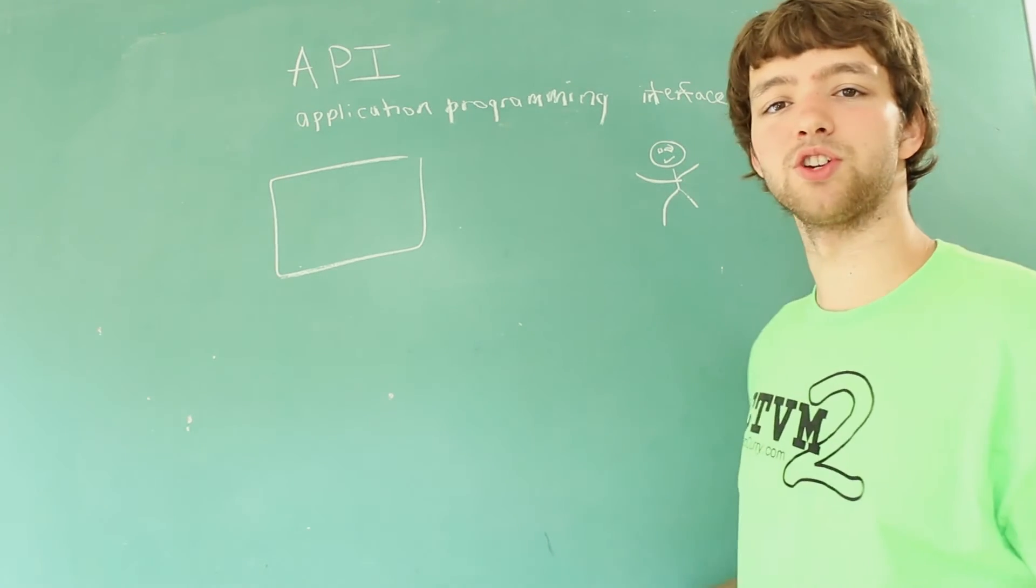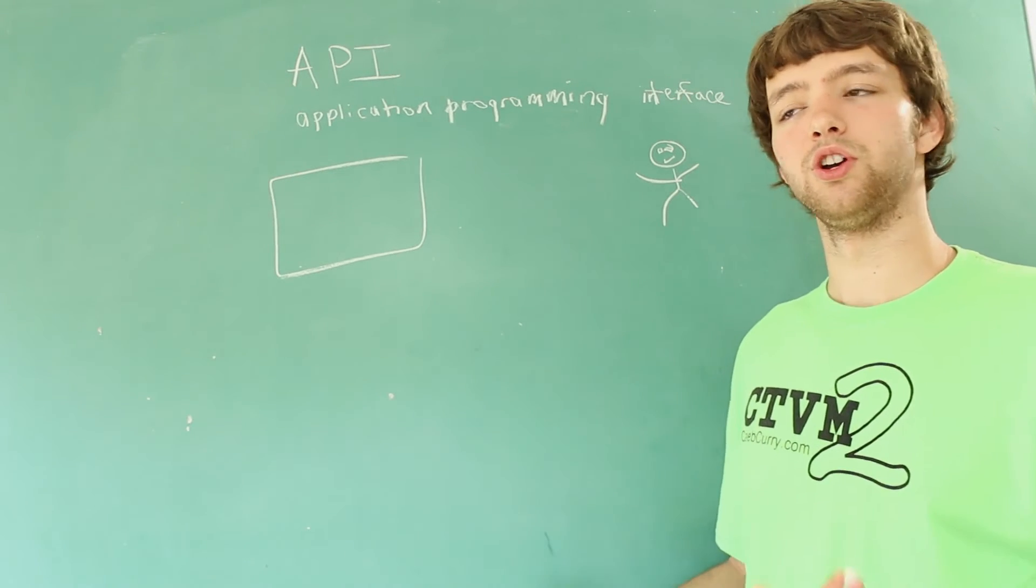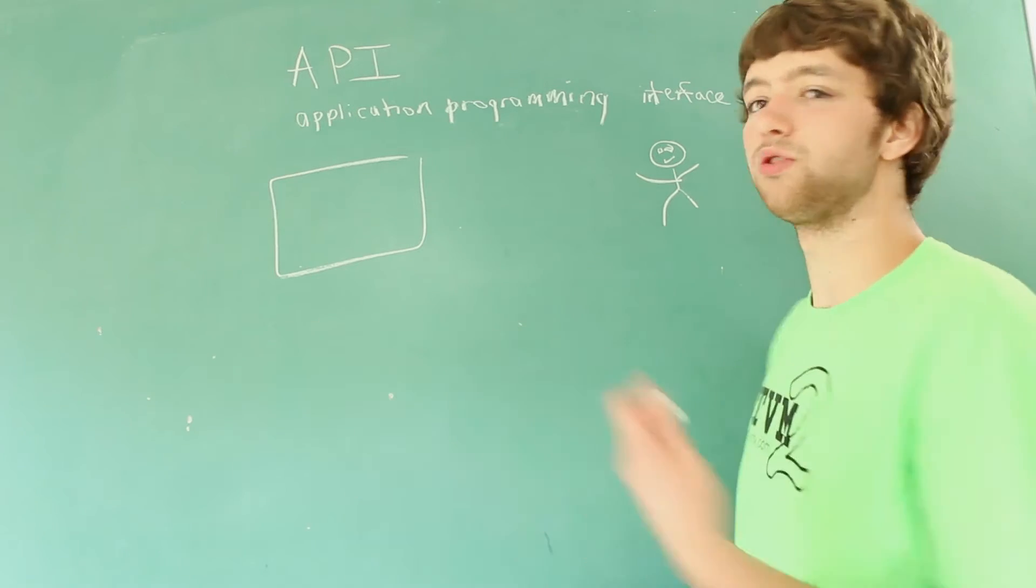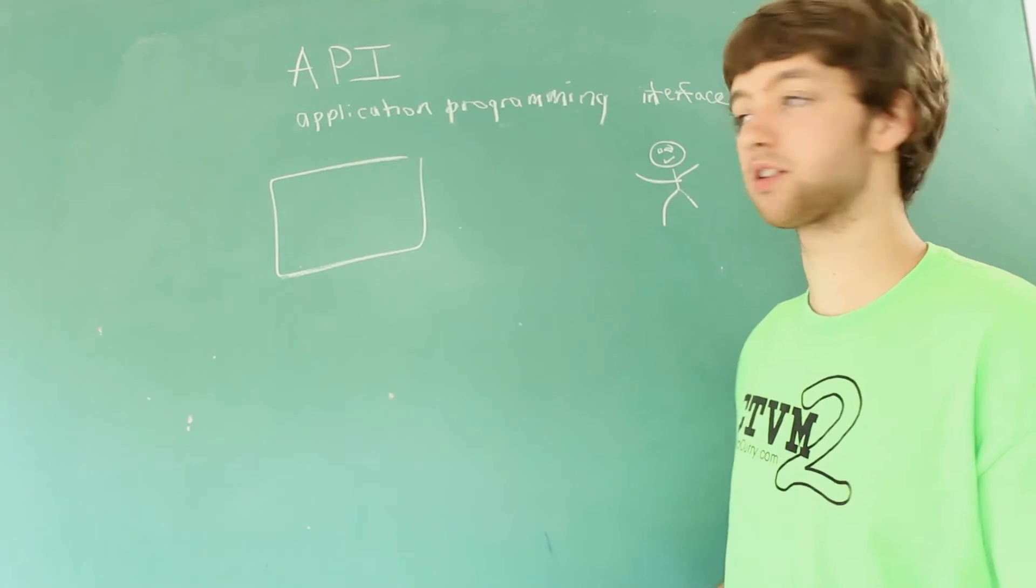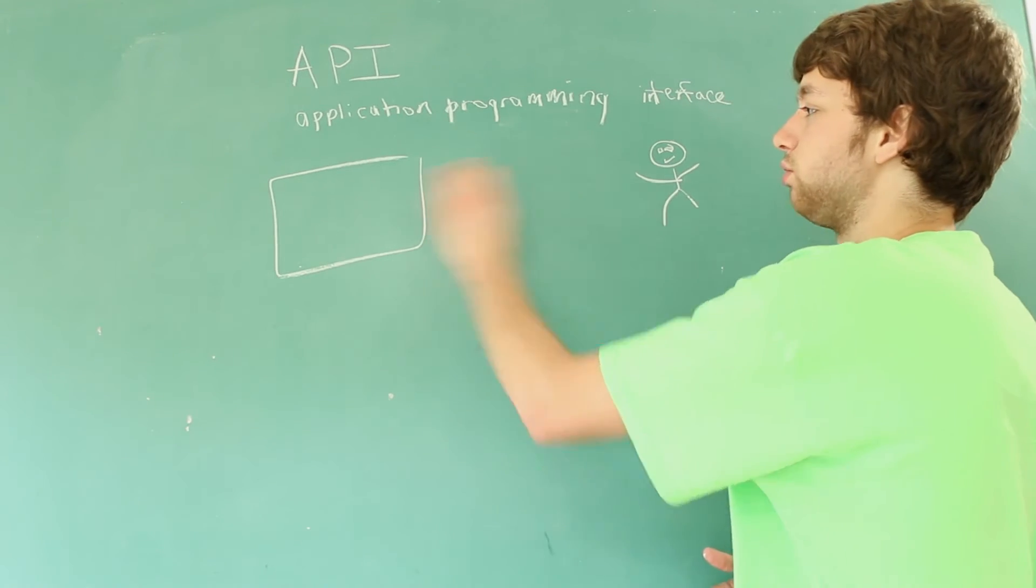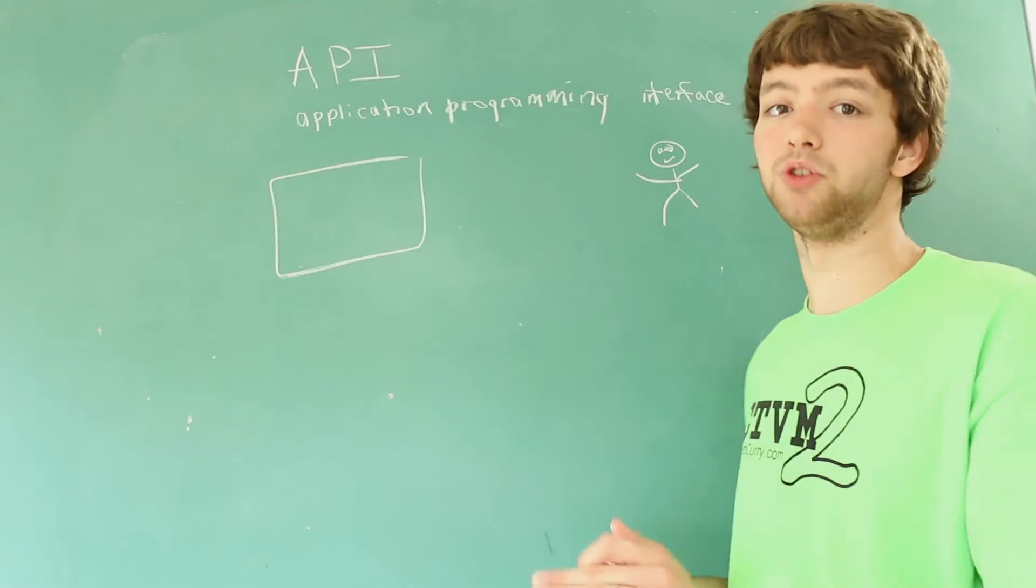Well, in this situation an API would be useful. And what it does is it allows you to allow people to do certain things and it allows you to prevent people from doing certain things. So the only way they can communicate with your application is from certain end points that you allow them to.